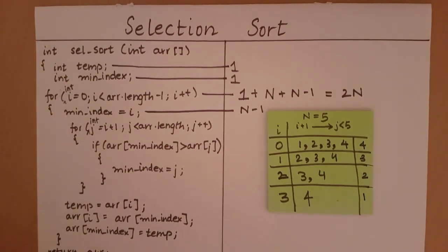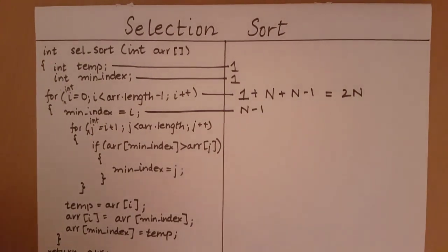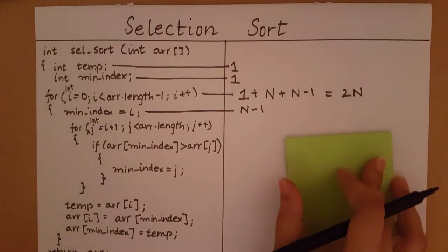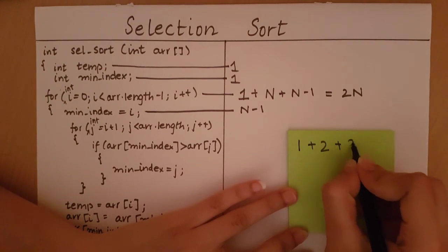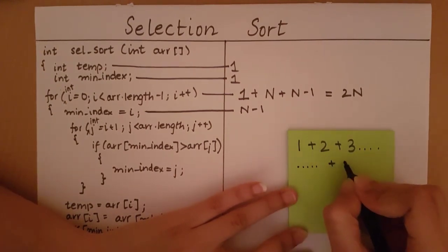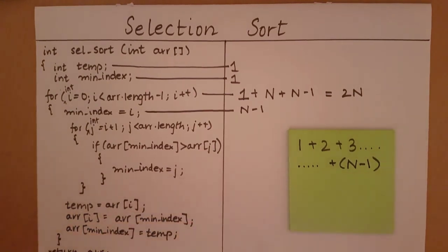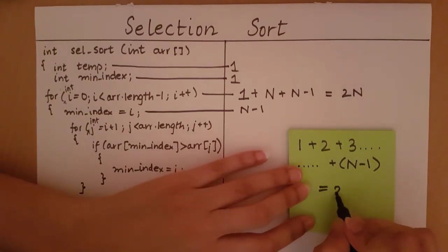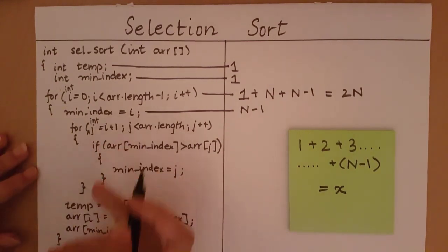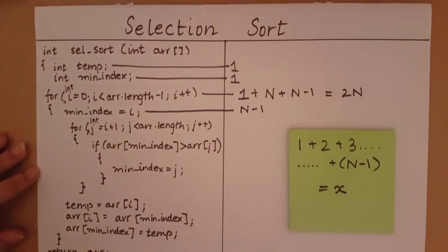So the j loop executes 1, 2, 3 times, keeping going until it reaches n minus 1 times. It does not execute more than that. So the j loop executes once, twice, thrice, up to n minus 1 times total. Let's call this expression x, just to make the counting easier so we don't have to write the whole summation every time.